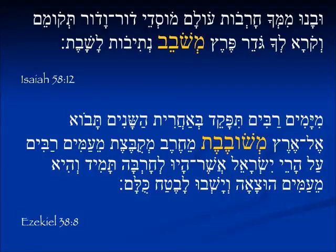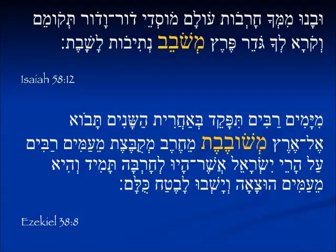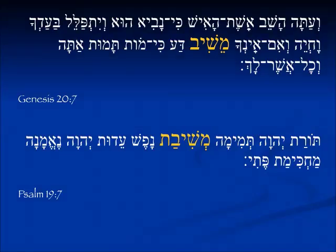We see a masculine singular form in Isaiah 58:12 — meshavev netivot lashevet — and probably you are familiar with this verse. The mishavev is translated as 'the restorer' — the restorer of the streets in which we can dwell. In Ezekiel 38:8 we have a feminine form, mishavevet mecherev, and it is feminine because it's talking about the land. Land is feminine, and it's the land which is being brought back from the sword.